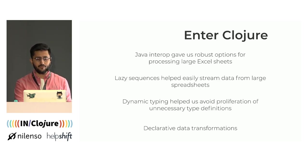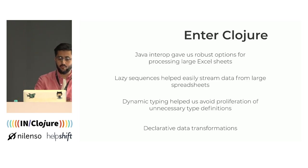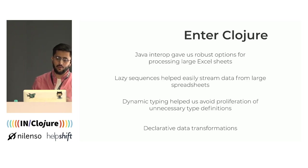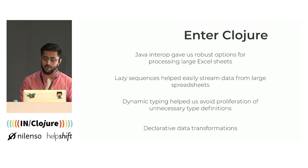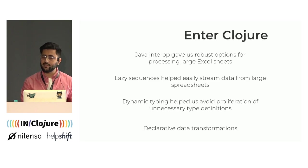We got great support for processing Excel sheets, even large ones, from mature libraries in the Java ecosystem, and Clojure's Java interop made it a breeze for us to use this. Features like lazy sequences we thought would help us read large spreadsheets as data streams and keep the memory footprint low. Dynamic typing meant we could keep the number of type definitions low and wouldn't have to define new types for every new dataset coming in. And of course, being a functional programming language, it gave us declarative data transformations. So Clojure was ticking a lot of the boxes, and we decided to give it a try.